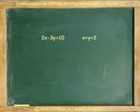One more example. Solve the system by substitution. 2x minus 3y equals 10, x plus y equals 2. There is no y equals y here.